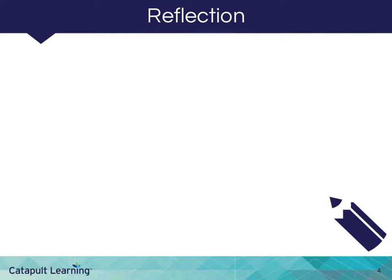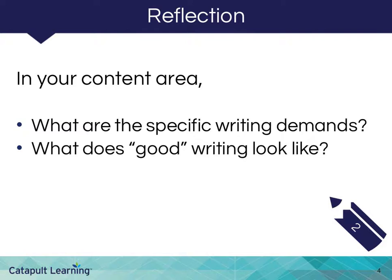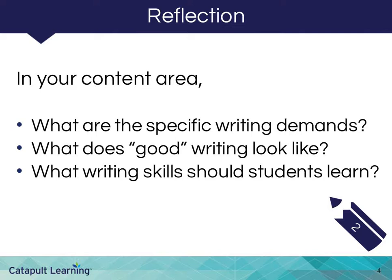Either by yourself or in a group, let's take some time to reflect on your understanding of what writing is in your field. What types of writing do historians, automotive technicians, and accountants use to communicate in their field? When your students write in your content area, what are your specific writing demands? What does good writing look like? And what are the specific writing skills students should learn? Please pause the video and describe your content area writing demands, expectations, and skills in your viewing guide. If you're able, share with your colleagues. Do you share a common vision of what good writing looks like? Is there an overlap in skills being taught or reinforced across content areas? Press play when you're ready to resume.